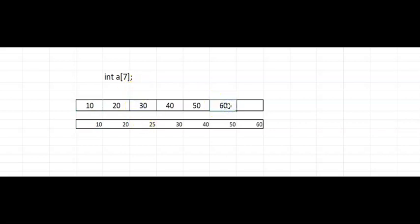What should ideally be done is: 60 should be moved, then 50, then 40, then 30 — all shifted right — and then we insert 25. This is a very costly operation. If there are 10,000 elements in the array, to insert an element you have to shift all the elements to the right and then make space and insert, which is very costly when a normal program is running.